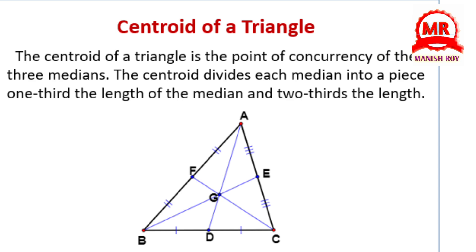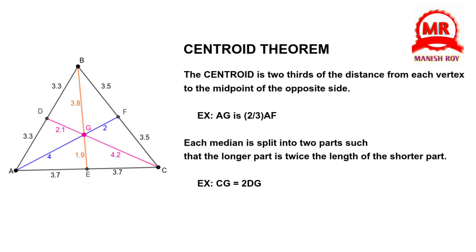Centroid of a triangle. The centroid of a triangle is the point of concurrency of the three medians. The centroid divides each median into a piece one-third the length of the median and two-thirds the length. Centroid theorem: the centroid is two-thirds of the distance from each vertex to the midpoint of the opposite side. For example, AG is two-thirds of AF. Each median is split into two parts such that the longer part is twice the length of the shorter part; for example, CG equals twice DG.